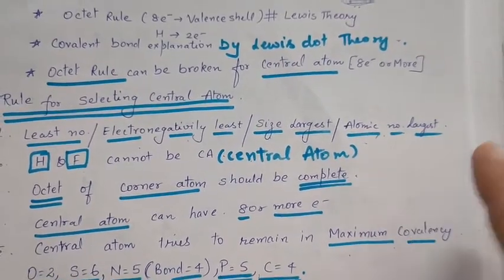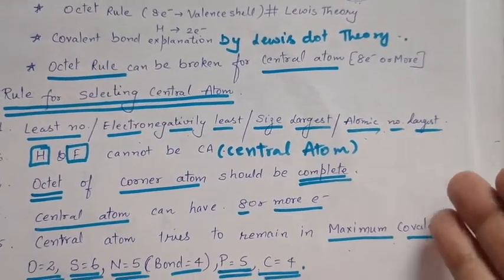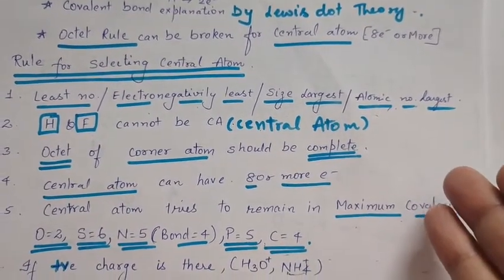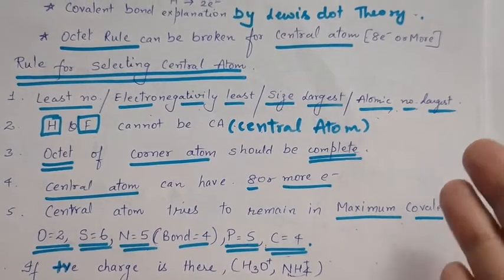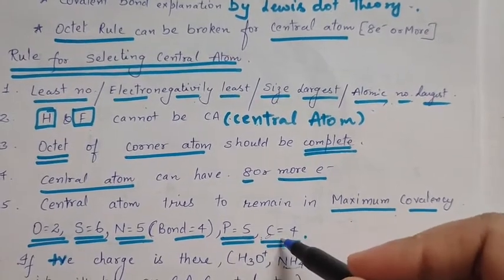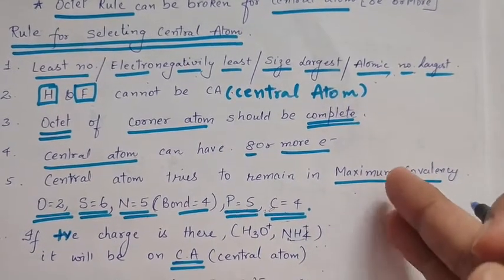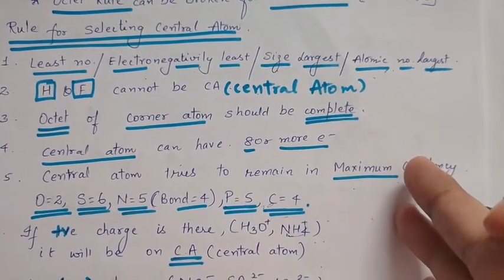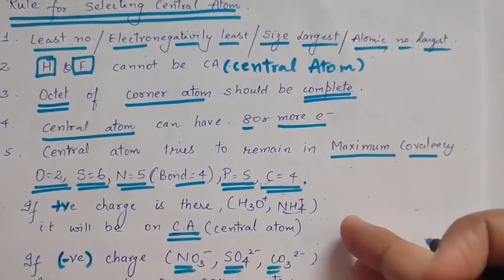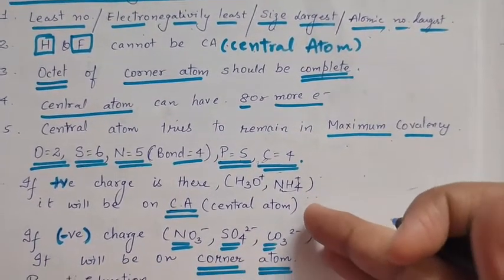The octet should be complete for the central atom. The octet rule can be broken — it can have eight or more than eight electrons. A very important rule: the central atom tries to always maintain maximum covalency. For oxygen it is two, for sulfur it is six, for nitrogen it is five (it can make maximum four bonds), for phosphorus it is five, and carbon maintains four covalency. When writing the Lewis dot structure, the positive charge is always added on the central atom, and the negative charge is always added on the corner atom.